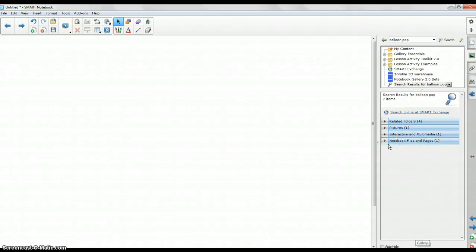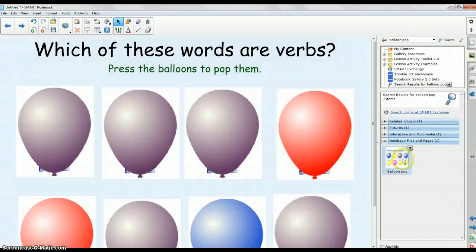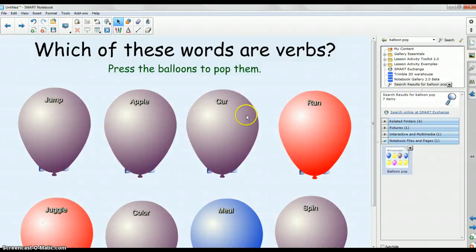And then what you're going to do is click down here on the notebook files and pages. These are already created pages that you just add the content to. And there's only one option there, it's Balloon Pop, so I'm going to double click. It automatically adds it and fills up the entire page. It comes with this verb lesson, and what we're going to do today is edit it for the math classroom.